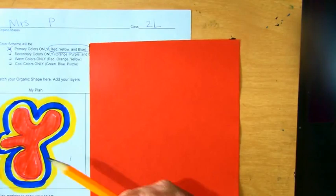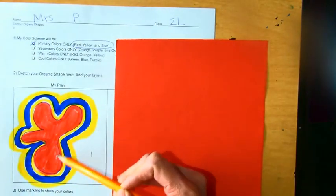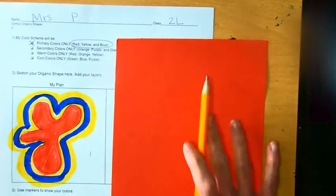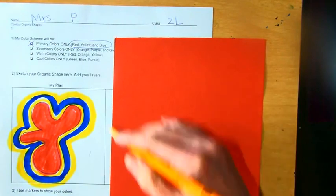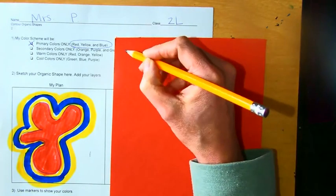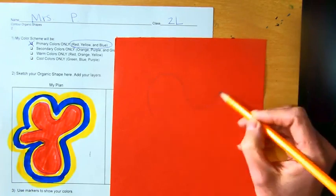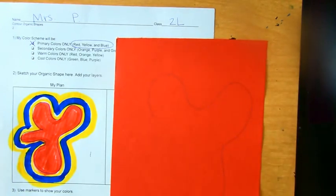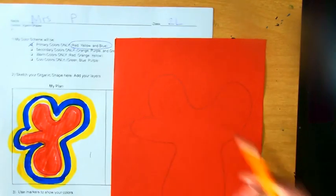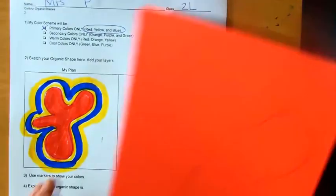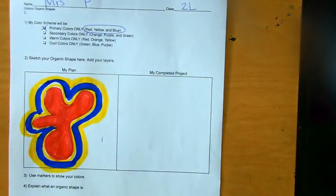Once you have that, you're going to take your pencil and you are going to sketch that shape using the paper, and you kind of want to fill it up. We don't want to make a super tiny little thing over here in the corner. We want to make it big enough that we're using that paper well. And then you are going to take that shape and you're going to use your scissors to cut it out.